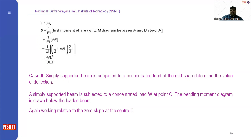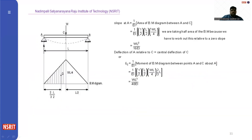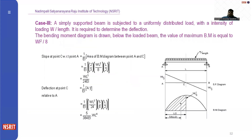Case 2: a simply supported beam with a point load at the middle of the span. Both ends are supported by reactions A and B, and at point C — exactly at the midpoint — a point load is applied. At this midpoint, zero slope is available. Using the First Theorem, slope at A = (1/EI) × area of BMD from A to C = (1/EI) × (1/2 × L/2 × WL/4) = WL²/16EI. The central deflection delta_C = WL³/48EI.